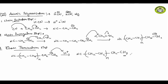The final product is (CH2-CH2)n-CH3 with CN at the start. This is our anionic polymerization mechanism. With this, this chapter is finished.